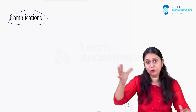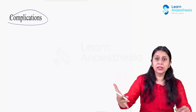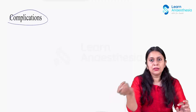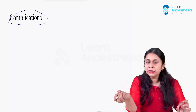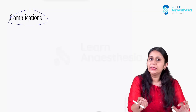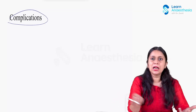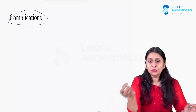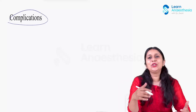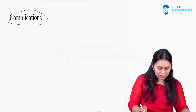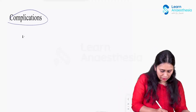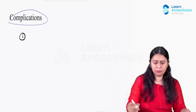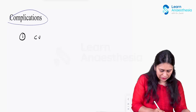The first complication: increased alveolar pressure increases intrathoracic pressure, which decreases venous return, which decreases cardiac output, which decreases blood pressure. So the first major problem with intrinsic PEEP is cardiovascular compromise. Very high intrinsic PEEP can cause sudden hypotension in the patient.